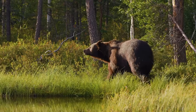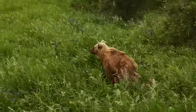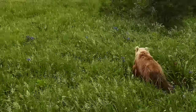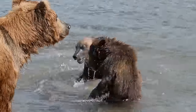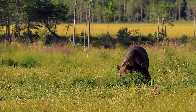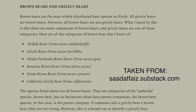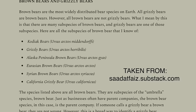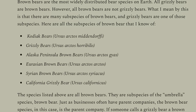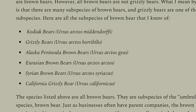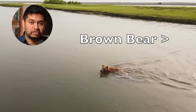Brown bears are the most widely distributed bear species on earth. Again, all grizzly bears are brown bears, however all brown bears are not grizzly bears. There are many subspecies of brown bears, and grizzly bears are one of those subspecies. Here are all the subspecies of brown bear: Kodiak bears, Alaska Peninsula brown bears, Eurasian brown bears, Syrian brown bears, the California grizzly bear, and of course the legendary grizzly bear. These are all brown bears — subspecies under the umbrella species brown bear.